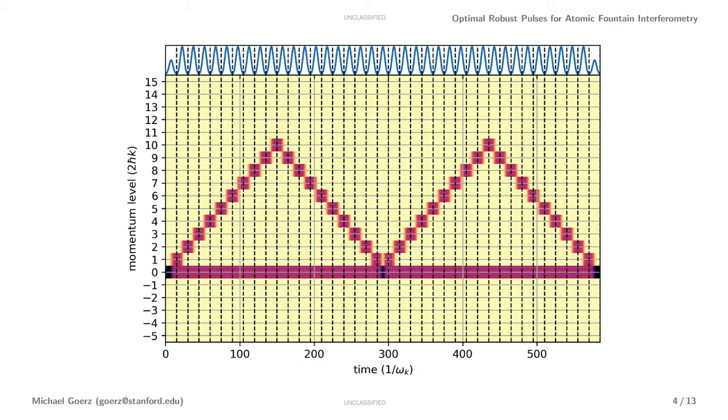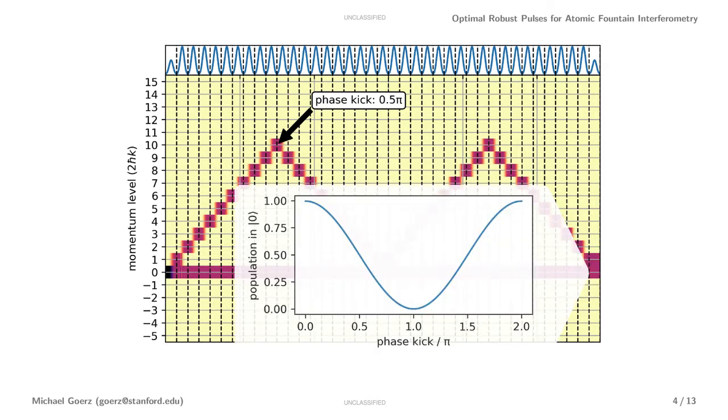What we're not taking into account here is the free time evolution where the two trajectories gather up different phases. But we can emulate this by just applying a phase kick right here at the inflection point. So for a phase kick of pi over 2, you end up in a superposition of 0 and 1. For a phase kick of pi, you invert the 0 and 1 level. And generally, you get a nice sinusoidal oscillation depending on the phase kick.